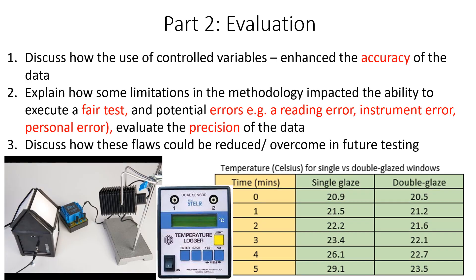Part two of the discussion is the evaluation of the methodology. Whenever we evaluate anything in science, we look for the pros and the cons. I want my students to go back to their introduction, have a look at the control variables that they identified, and explain, utilising scientific literacy, how that has enhanced the accuracy of their data. For instance, we did two trials here, we used the same equipment for all trials, we used the same data logger, and ideally we've measured the gap between the lamp and the windows. All of this helps enhance our ability to accurately measure our DV.